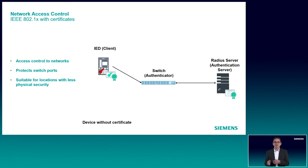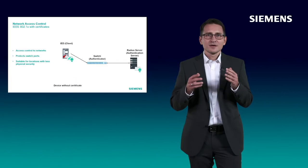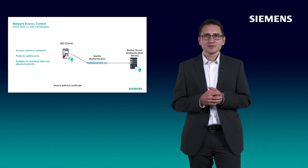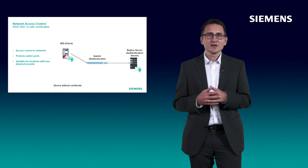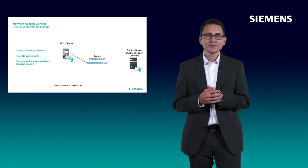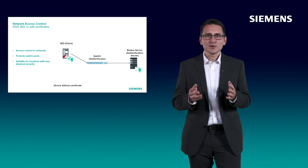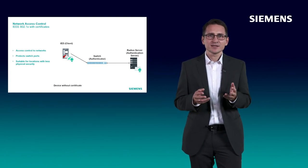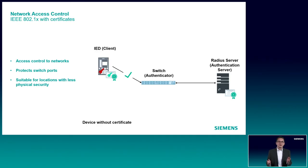During startup of the IED, it sends an access request with the client certificate. The switch forwards this request to the RADIUS server, and the RADIUS server checks if the client certificate and the access request are valid. The RADIUS server provides feedback to the switch that the authentication was successful, and the switch will grant access to the network. Only the IED with the corresponding private key will be granted access by the RADIUS server. In a scenario where someone unplugs the IED and connects any device without a valid certificate instead, it will not be able to connect to the network. The whole process happens automatically without any user interaction.